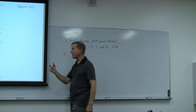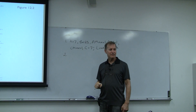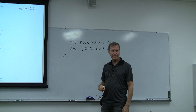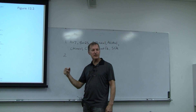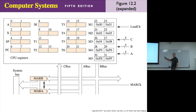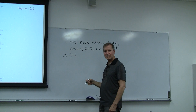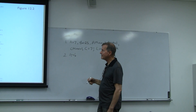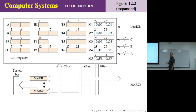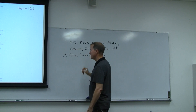Now the low order byte is done. For the second cycle we want to add 0 to the high order byte but also add the shadow carry. So A equals 6 — that's the address of the high order byte of the program counter. Then B equals 22 — that's where the constant zero is stored.